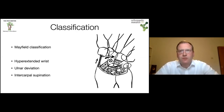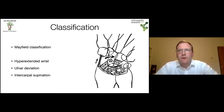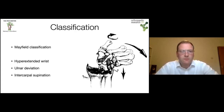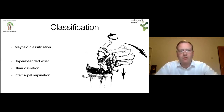The center of rotation is in the capitate, and force in ulnar deviation injures the soft tissues on the radial side of the wrist first. As that force progresses through the carpus, intercarpal supination occurs centered through the triquetrum, injuring the soft tissue on the ulnar side. If you remember that a soft tissue perilunate occurs with a hyperextended wrist in ulnar deviation with intercarpal supination, you've advised the examiner you're aware of not just the classification but how the mechanism works.